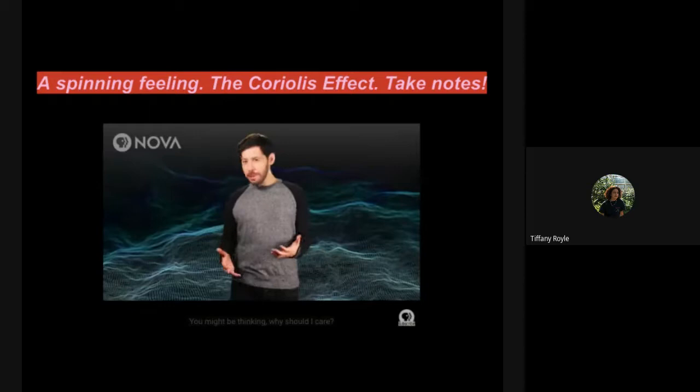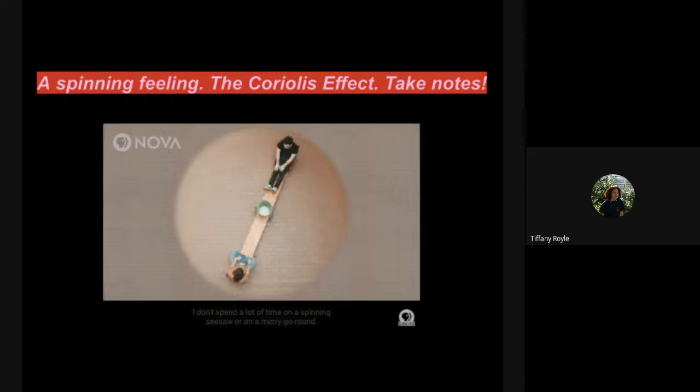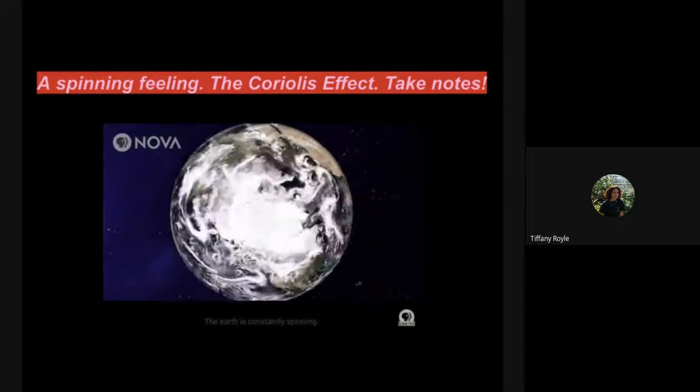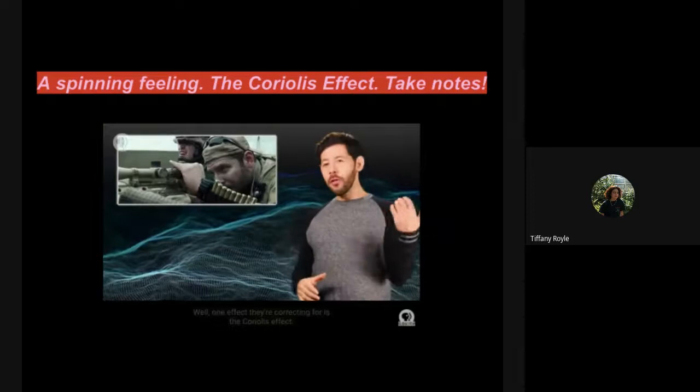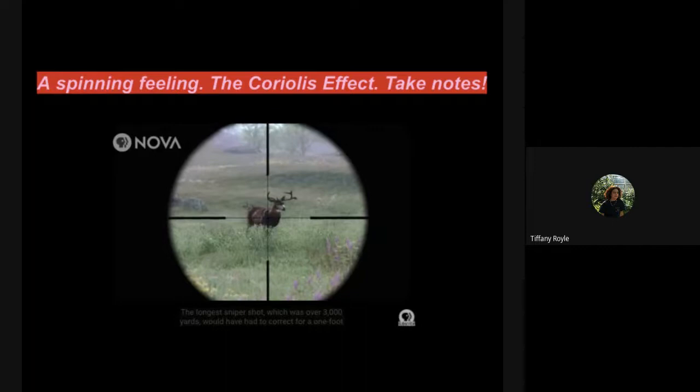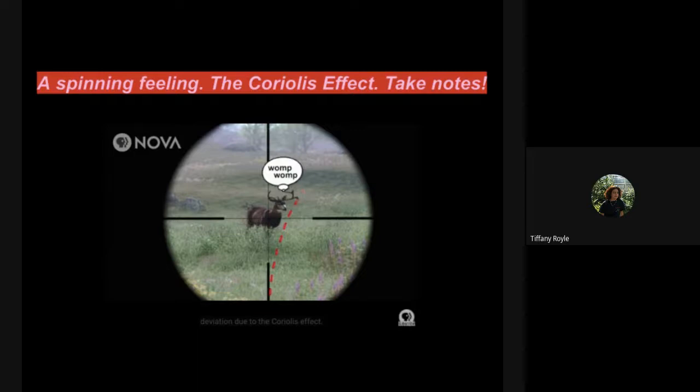You might be thinking, why should I care? I don't spend a lot of time on a spinning seesaw or on a merry-go-round. But you kind of are on a merry-go-round. The Earth is constantly spinning. Have you ever seen someone in a movie making fine adjustments on their gun? Well, one effect they're correcting for is the Coriolis effect. The longest sniper shot, which was over 3,000 yards, would have had to correct for a one foot deviation due to the Coriolis effect.